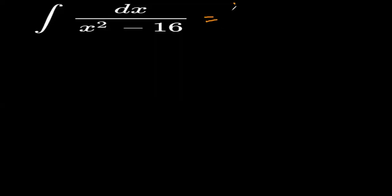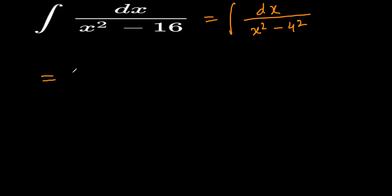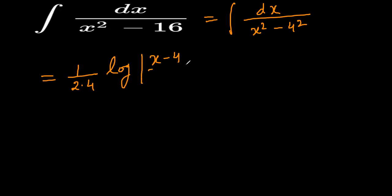This can be written as dx divided by x squared minus 4 squared. Now we have a formula for this. This integration is equal to 1 over 2a times log of x minus a divided by x plus a.